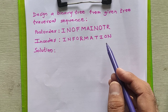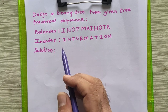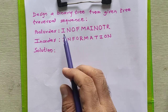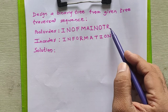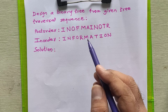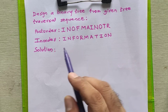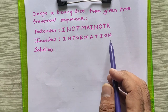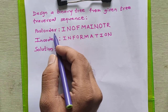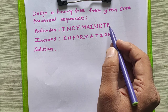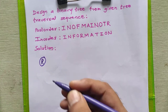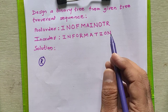As we know, in post-order sequence the root node always comes at the last. So here is the root node. Now to get the root node of this tree, I will refer to the post-order sequence. From the post-order sequence I came to know that R is the root node, so we will draw R as the root node here.